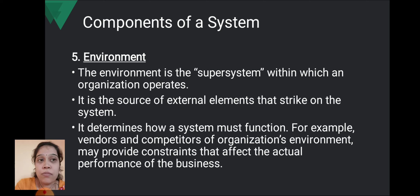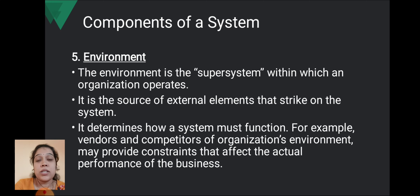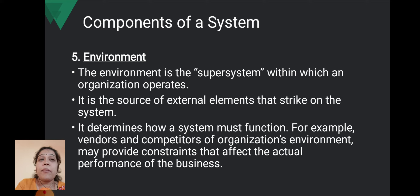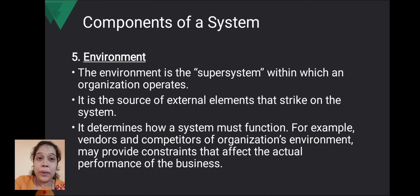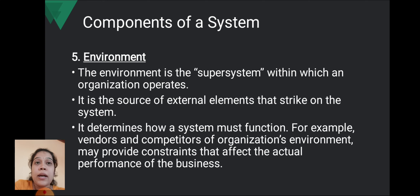Next is the environment. The environment is a super system within which an organization operates. For example, if you are organizing a program in college, the college is the environment — a super system within which the organization operates. It is the source of external elements that impact the system and determines how a system must function. For example, vendors and competitors of the organization; the environment may provide constraints that affect the actual performance of the system.